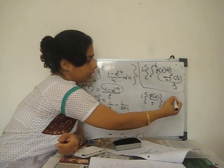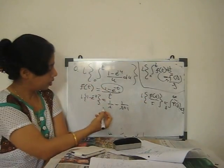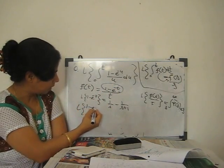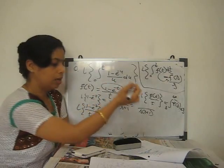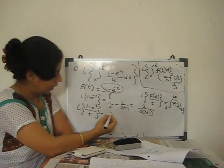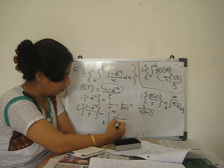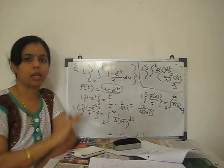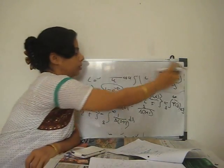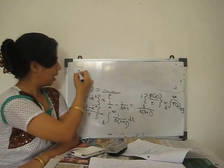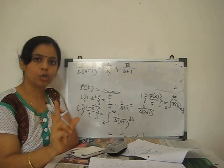The division-by-t property states: L{f(t)/t} = ∫ₛ^∞ F̄(s) ds. So L{(1 − e^(−t))/t} = ∫ₛ^∞ [1/s − 1/(s+1)] ds, which simplifies to ∫ₛ^∞ 1/[s(s+1)] ds. Using partial fractions: 1/[s(s+1)] = A/s + B/(s+1).